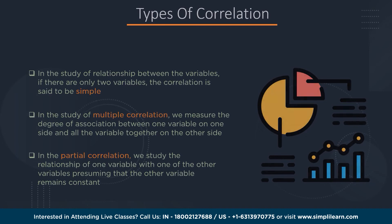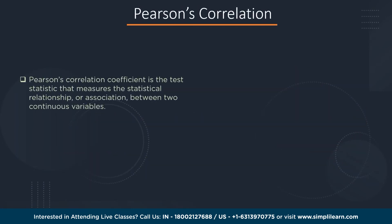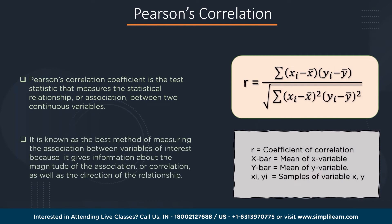Now let's discuss the two major methods to calculate a correlation coefficient. The first is Pearson's correlation. Pearson's correlation coefficient is the test statistic that measures the statistical relationship between two continuous variables, denoted by R. The formula is: R = Σ(xi − x̄)(yi − ȳ) / √[Σ(xi − x̄)² · Σ(yi − ȳ)²]. Pearson's correlation is the best method as it gives information about the magnitude of association as well as the direction of the relationship between the two variables.